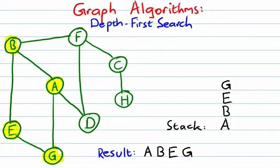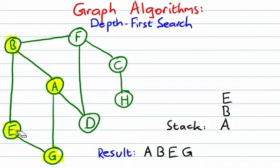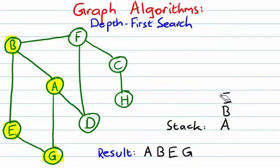Now the vertex on top of the stack is G. We find all adjacent unvisited vertices. Both A and E have already been visited, so there's no place to go from G. We pop it off the top of the stack, which takes us back to E. Notice we're kind of going backwards in our path. E also has no adjacent unvisited vertices, so we pop it off the stack, which takes us back to B.